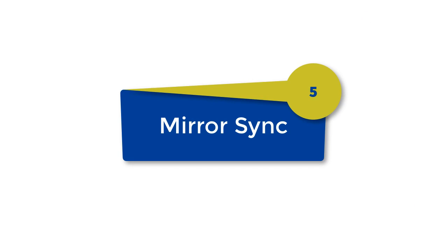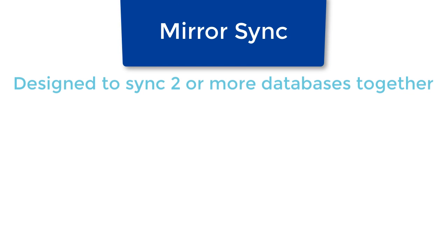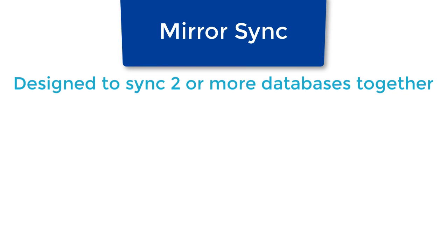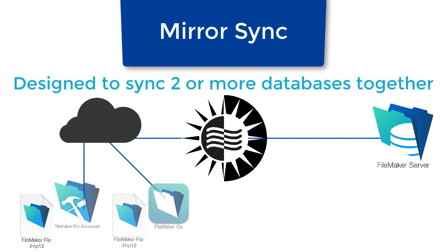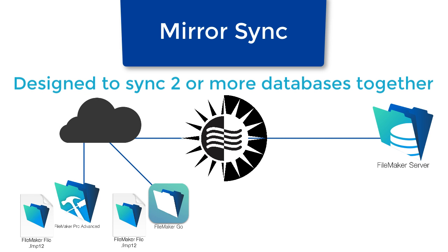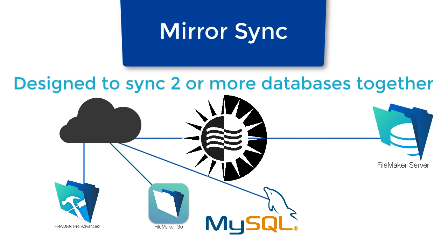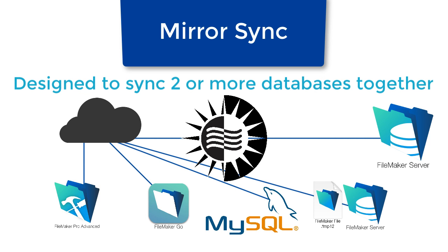This video is a short update on the MirrorSync product. So MirrorSync is a product designed to sync two or more databases together. For instance, you could sync FileMaker Server with an offline copy on FileMaker Pro or Go. You could sync FileMaker Server with a MySQL database. You could sync FileMaker Server with another FileMaker Server database, and you could do any kind of mixture of them — like sync FileMaker Go with MySQL, or MySQL with Oracle.